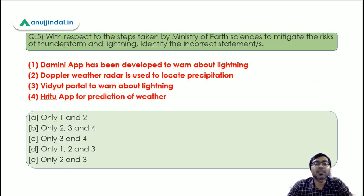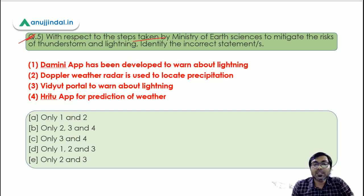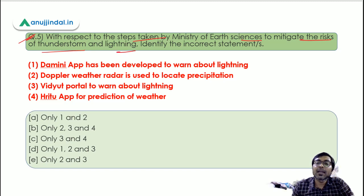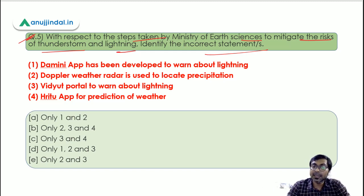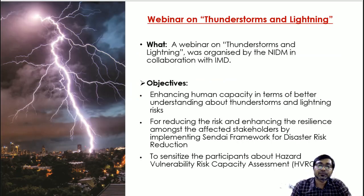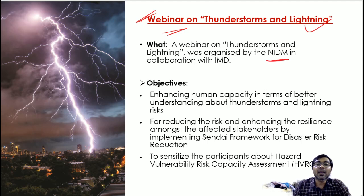Now let's move on to question number five, which is the last question for today. Question five is: with respect to the steps taken by the Ministry of Earth Sciences to mitigate the risk of thunderstorm and lightning, identify the correct statement. This involves the Ministry of Earth Sciences, NIDM - National Institute of Disaster Management - and IMD - India Meteorological Department.